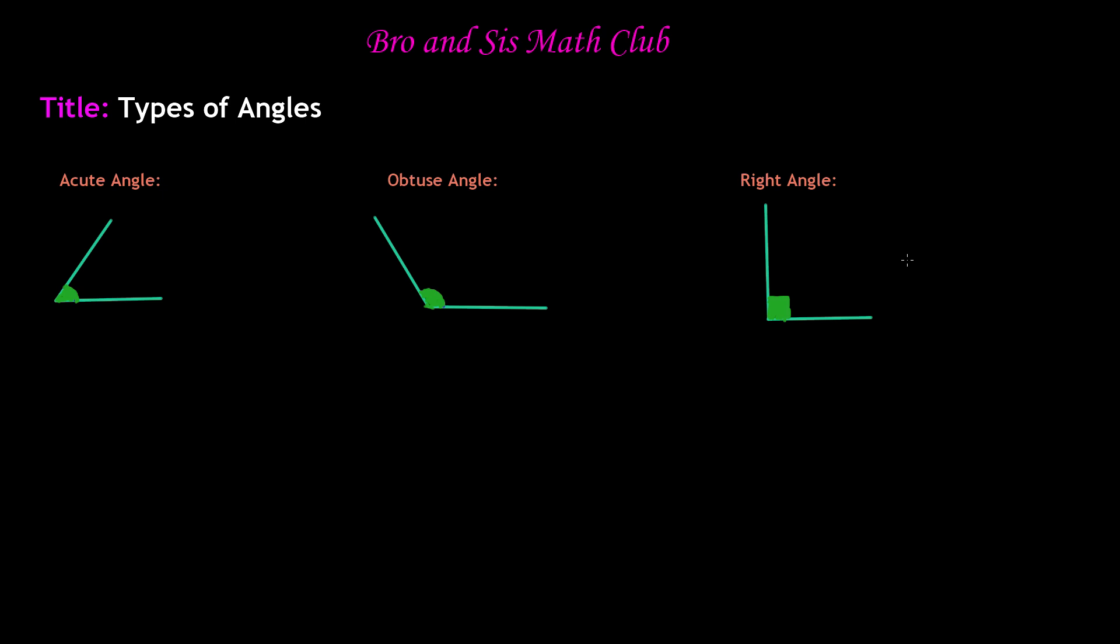So before we begin, what exactly is an angle? Well, an angle is just the amount of rotation between two straight lines that share a same common vertex. So vertex is just an endpoint.